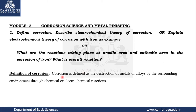Corrosion is defined as the destruction of metal or alloy by the surrounding environment through chemical or electrochemical reactions. This means metal and alloy both play an equal role in bringing about the corrosion process.